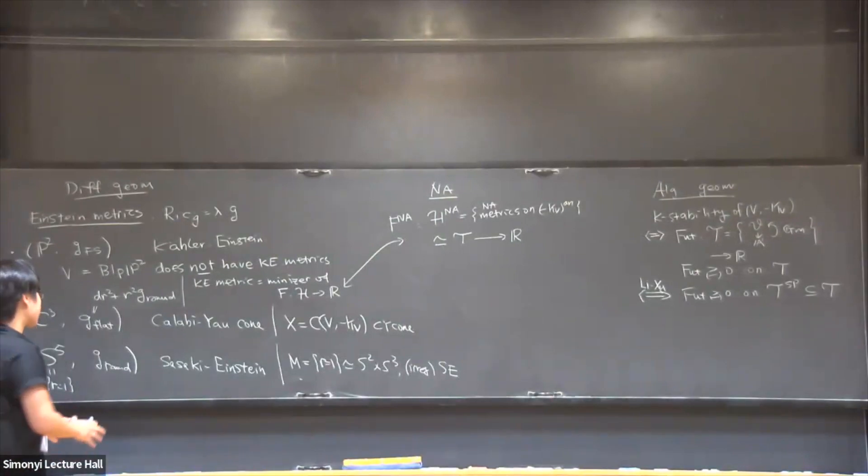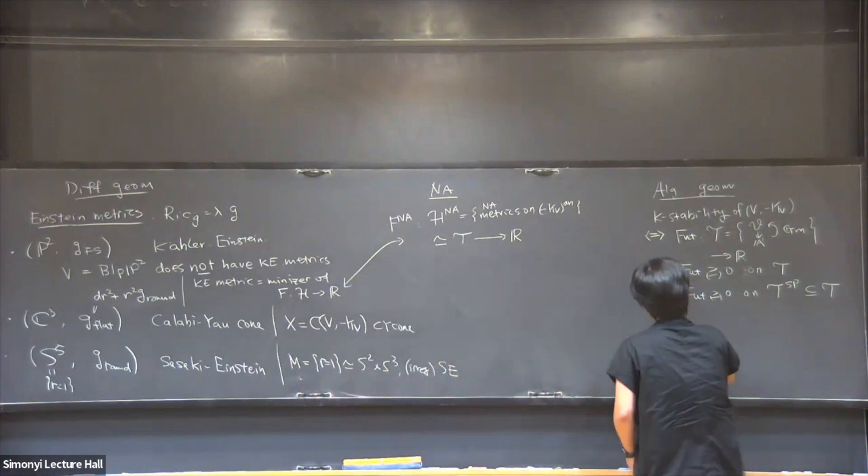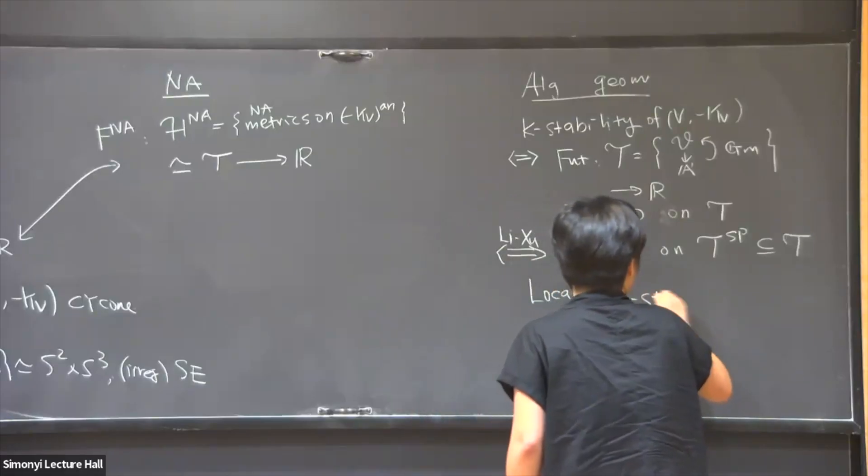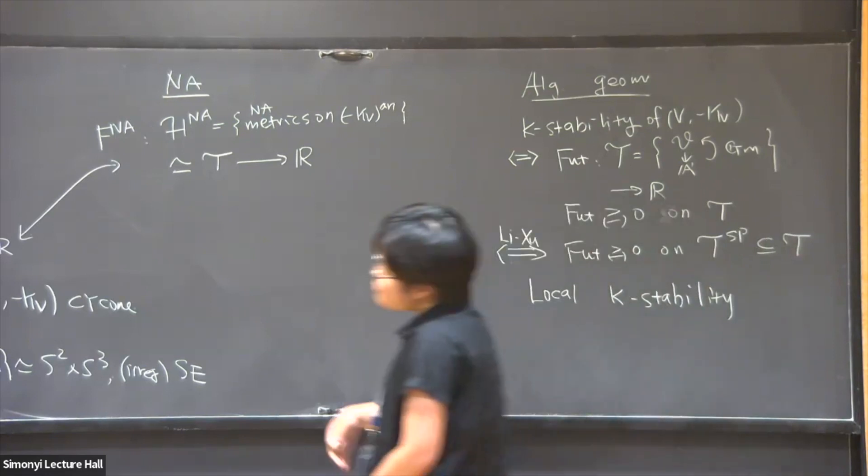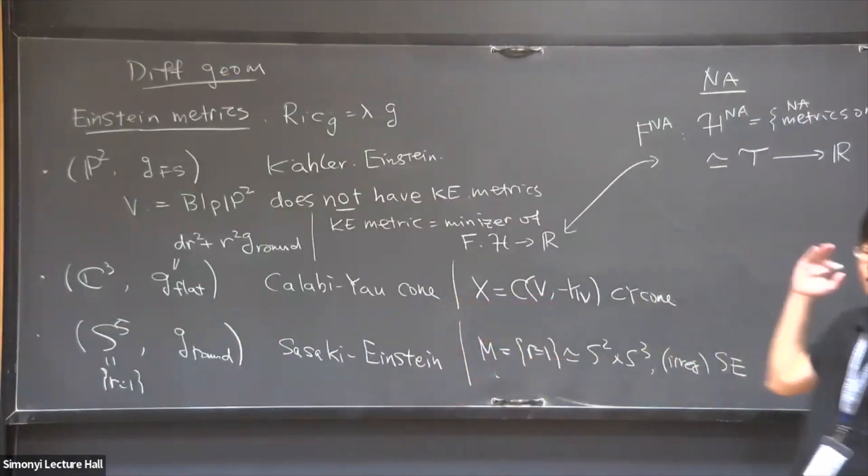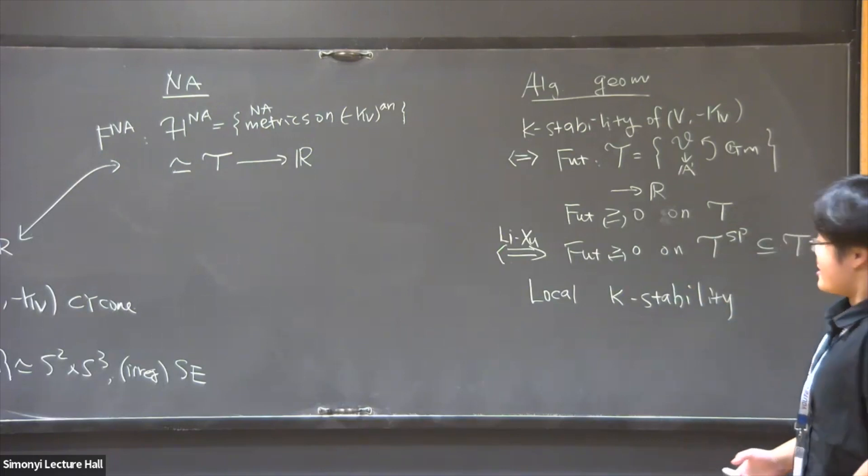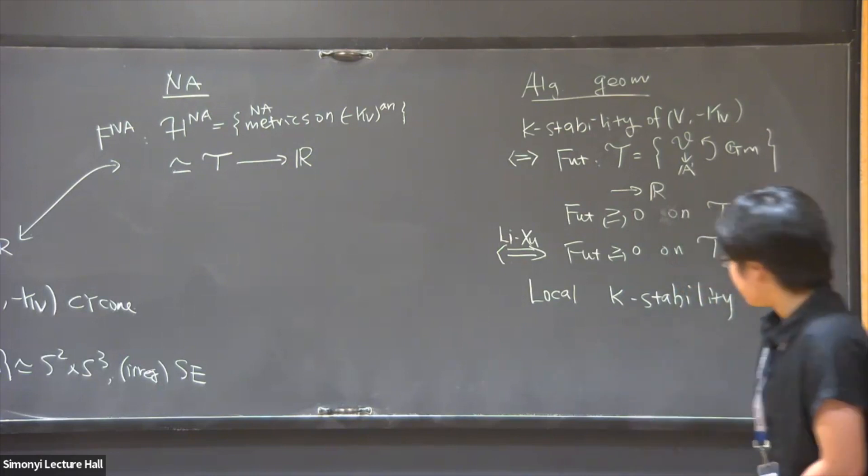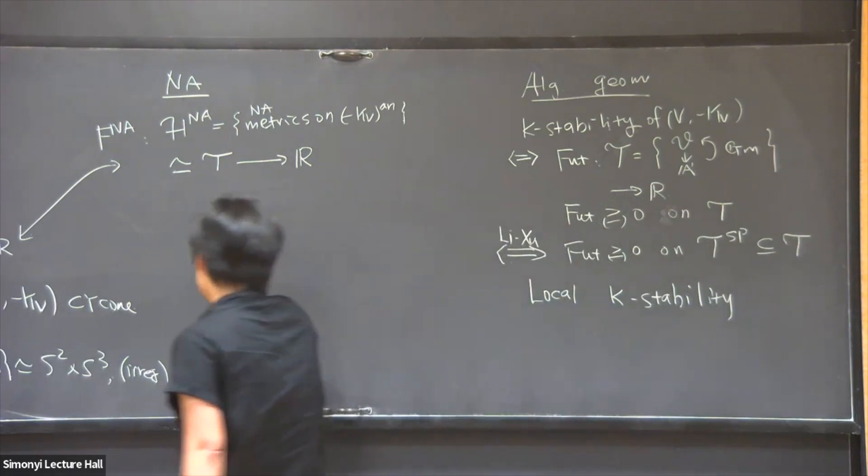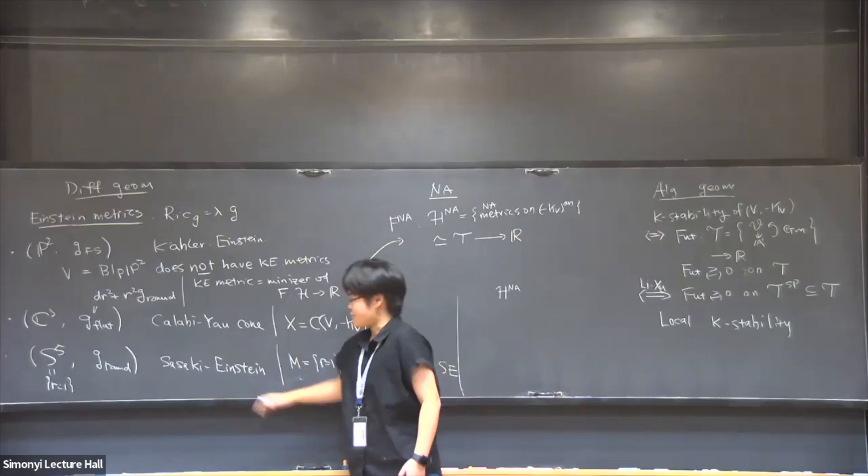So this is the story about Fano varieties. And what I've been thinking about is more on the local setting. And it turns out that there is a local K-stability in this setting as well, except that there are two problems. One is that if you're working with the affine cone, then you're getting out of the world of proper compact spaces. And two, the Futaki invariant in this local setting is not completely algebraic. So it makes it harder to study local K-stability from the algebraic geometric point of view. So instead, I was looking for some non-Archimedean characterization.